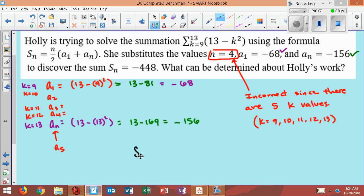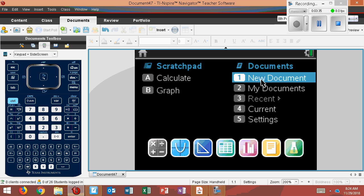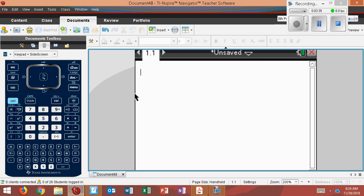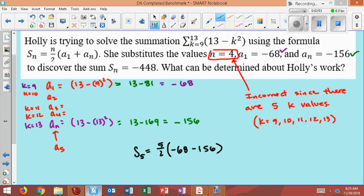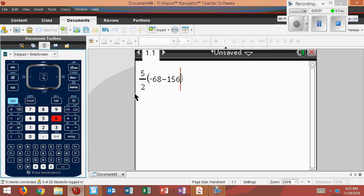So this sum was off because what we should have had here is a 5. To get the correct sum, I would say S₅, since there are 5 terms, equals 5 over 2 times a₁, which a₁ we said is negative 68, plus negative 156. So plus the negative just would become minus 156. That's our aₙ here. If I plug it in, it should give us the same value as this does in the calculator.